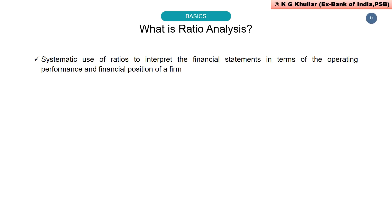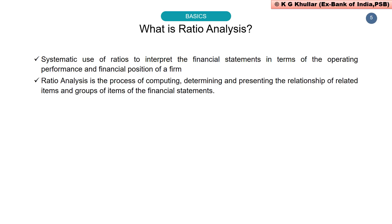Let us first see what ratio analysis is. Ratio analysis refers to the systematic use of ratios to interpret the financial statements — that is, balance sheets, profit and loss statements, and cash flow statements — in terms of the operating performance and financial position of any firm. Ratio analysis not only tells the performance of any firm during a period, but also helps to find out any cross-sectional or time series relation between various ratios. In the past, security was considered sufficient consideration for banks to grant loans, but nowadays the entire lending is need-based, with emphasis on the financial viability of a proposal.